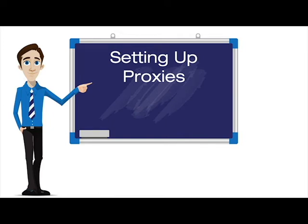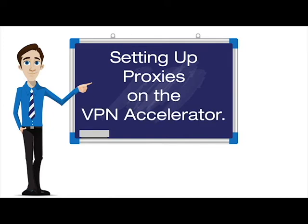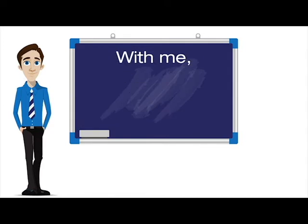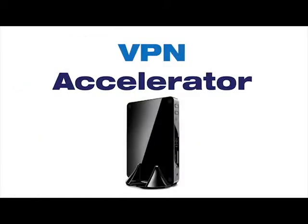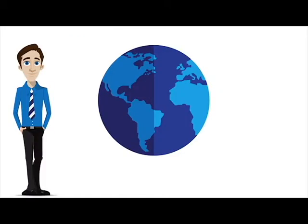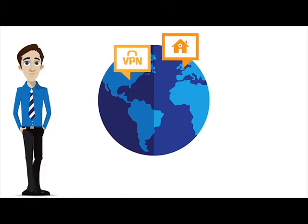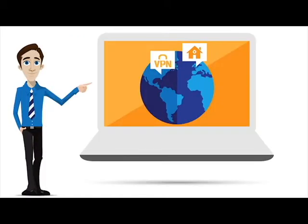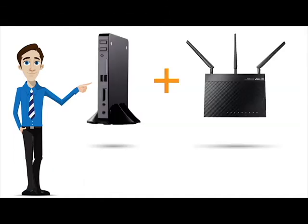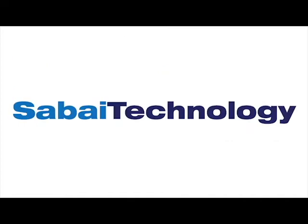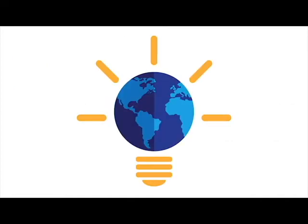This is Setting Up Proxies on the VPN Accelerator, with me, Bruce Wan. The VPN Accelerator proxy setup is used when you want to access two locations on a single device. You will need both a VPN Accelerator and a VPN Router from Sabai Technology to utilize this feature.